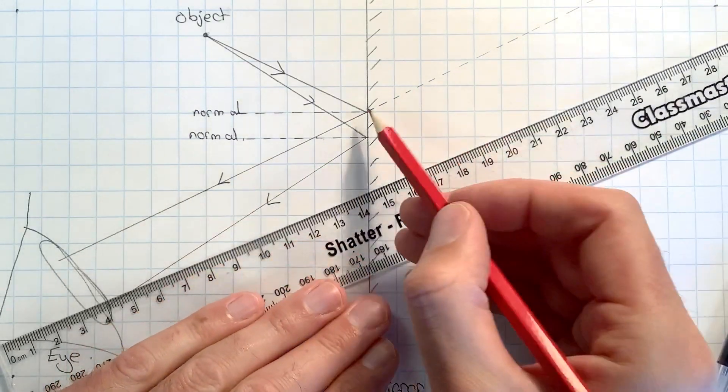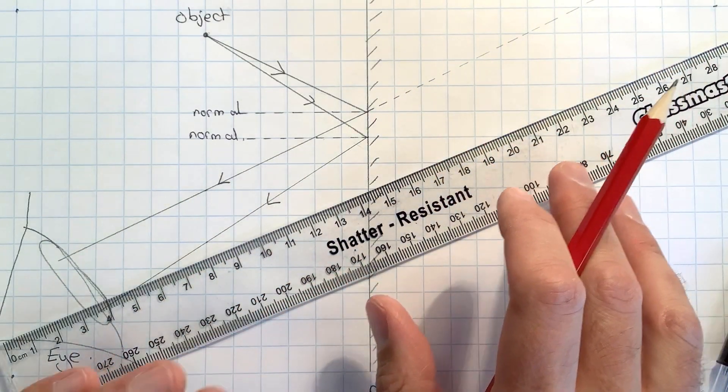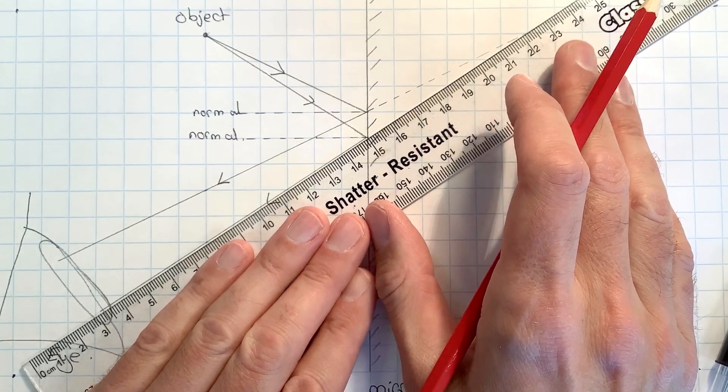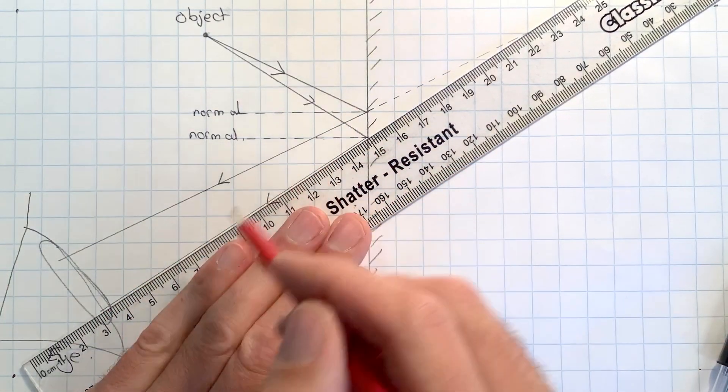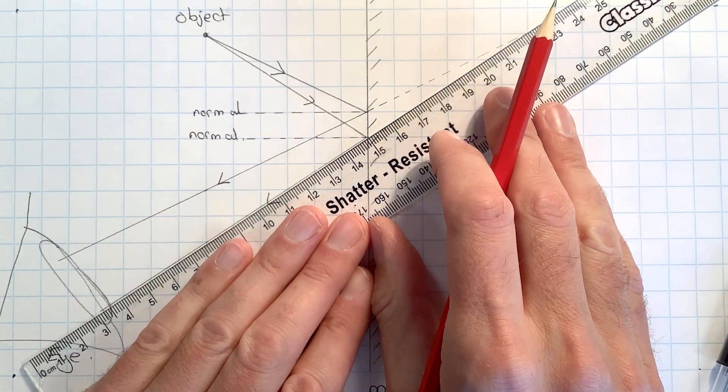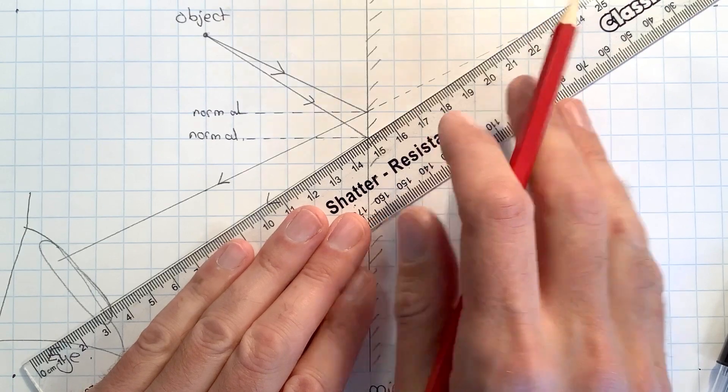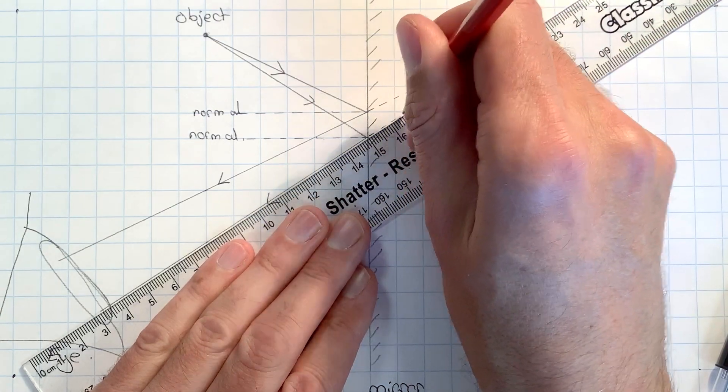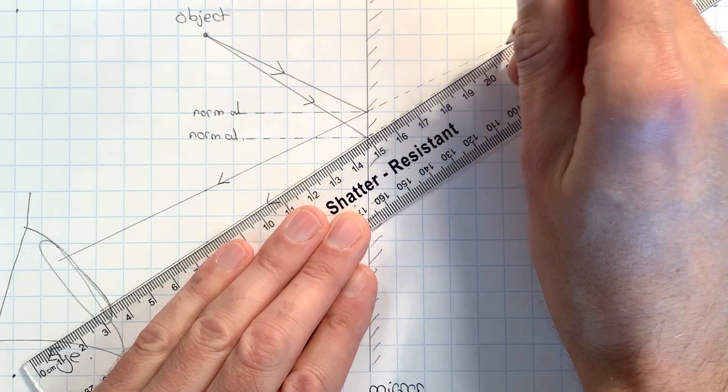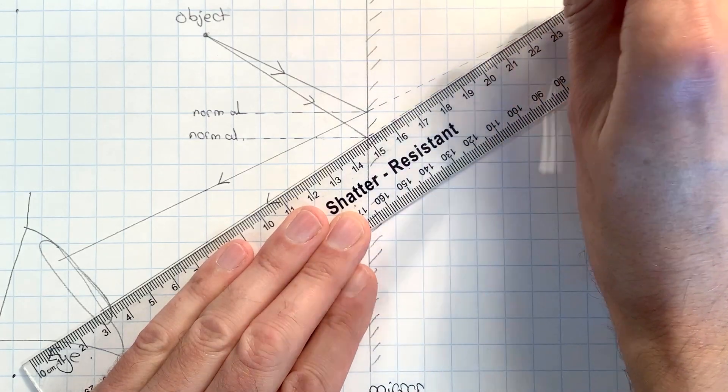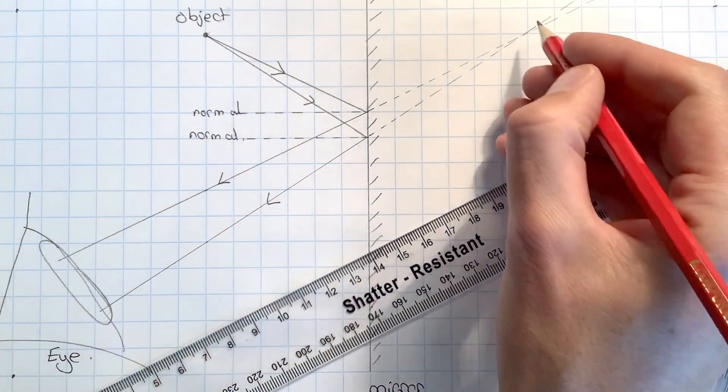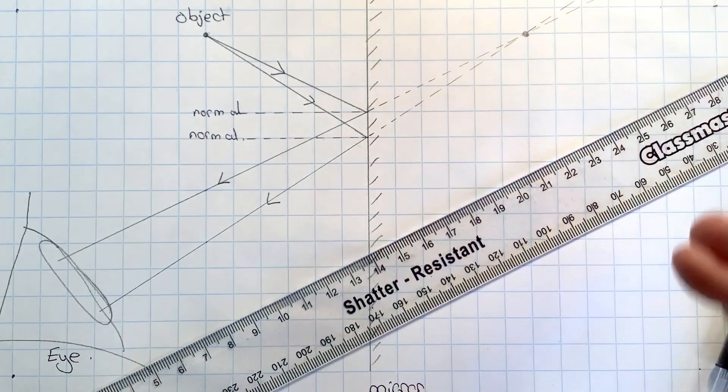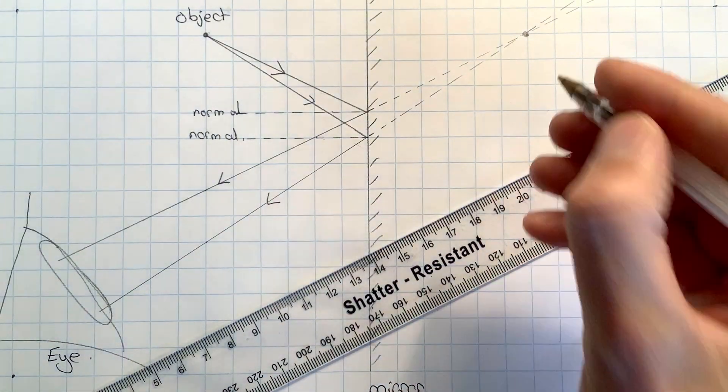We need to do exactly the same thing for the other reflected ray. So I'm lining the ruler up perfectly alongside it and once I've got that perfectly lined up, I need to do another virtual ray going back. The important point is where these virtual rays cross, which is about here, and that is where the image will form.